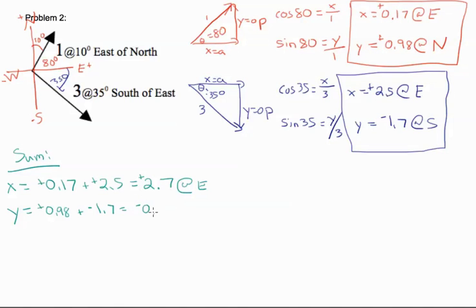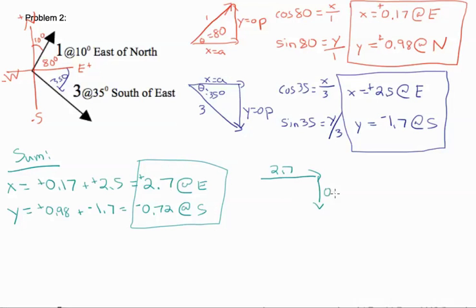So this is our x and y components. And if we draw them, we have east and we have south. So our resultant is here and our theta is there.